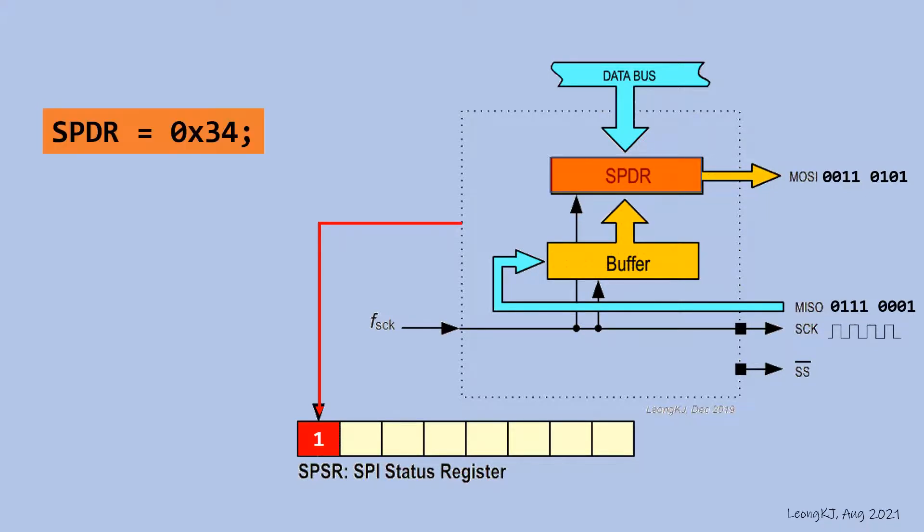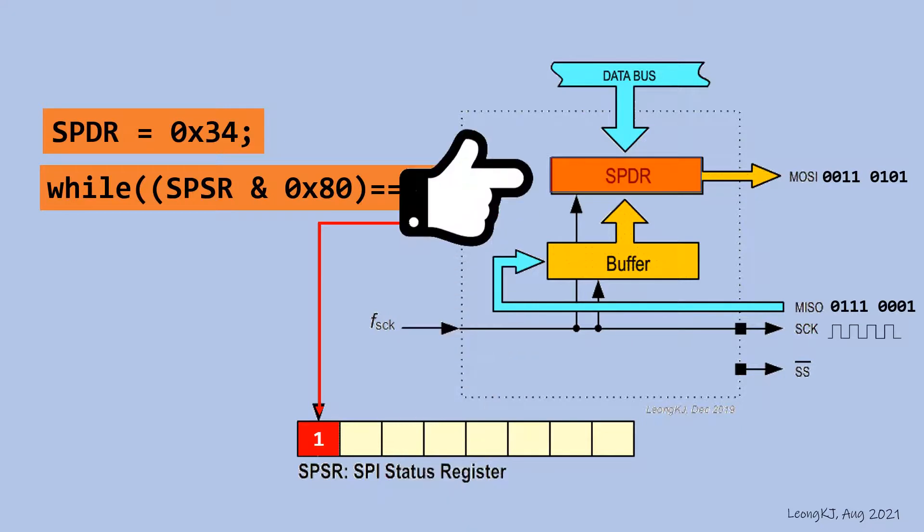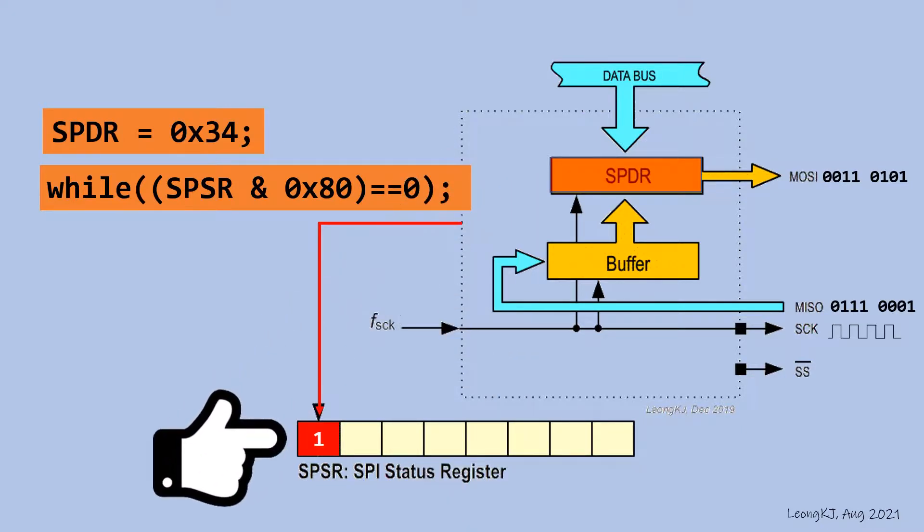Therefore, after this C instruction, the next instruction is to monitor the SPIF flag. This instruction waits for the SPIF flag to become 1. Reading the SPDR register clears the SPIF flag to 0.